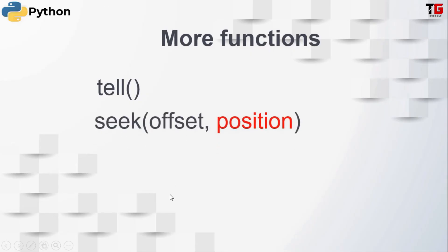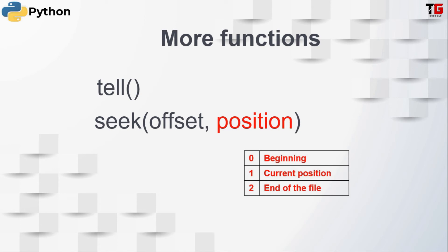After tell(), the next function is seek(). The tell function tells about the location of the current file pointer, and the seek function helps us to jump to a new location — we can move forward or backward. Seek accepts two parameters: the first is offset, which is the number of bytes we want to jump, and the second is position — the location from where we want to jump. If I specify 0, I want to jump from the beginning. If I specify 1, I jump from the current position. If I specify 2, I jump backward from the end of the file.